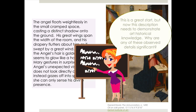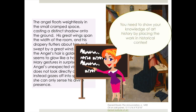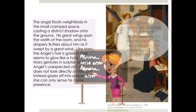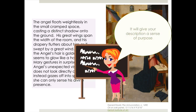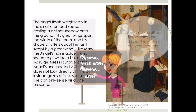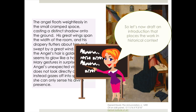Now this was a really nice description, but it could have been written by anybody who hasn't taken an art history class. This description needs to demonstrate art historical knowledge. Why are any of these observed details significant? Why should we care? You need to show your knowledge of art history by placing this work in historical context. Placing the work in context will also help your reader understand why it's so extraordinary to see Mary and the angel depicted in this way. That's the part you need to work on — placing your description in context and demonstrating art historical knowledge. This is what's going to give your description a sense of purpose as well.